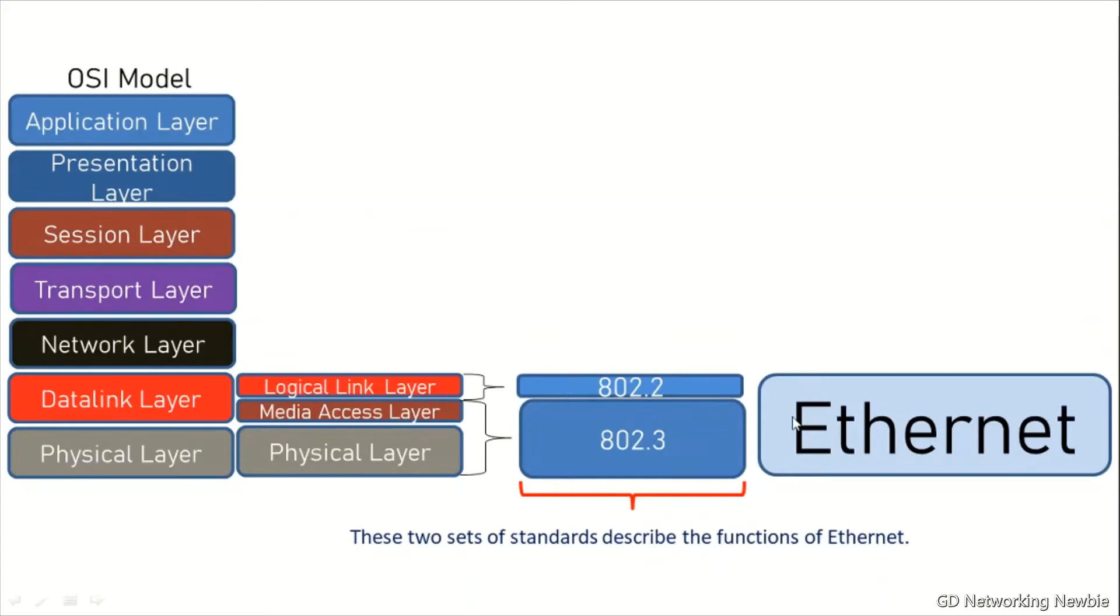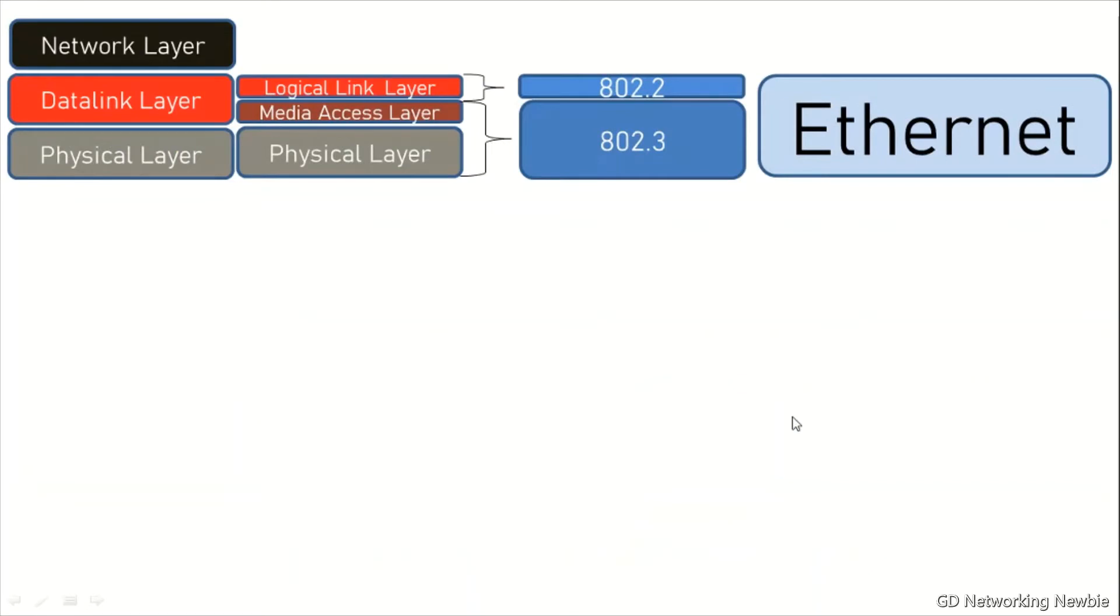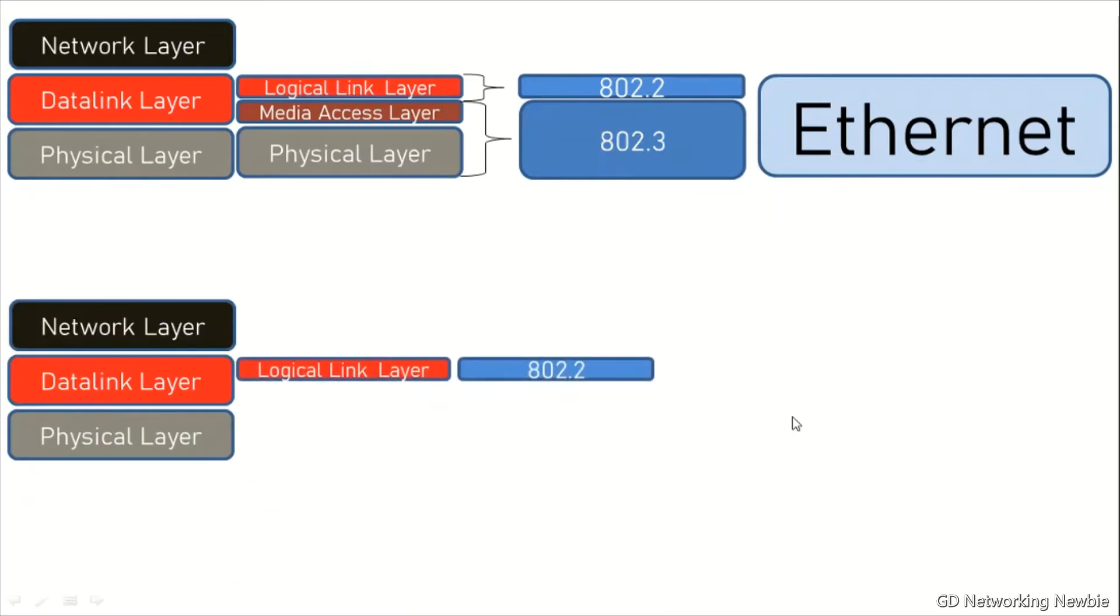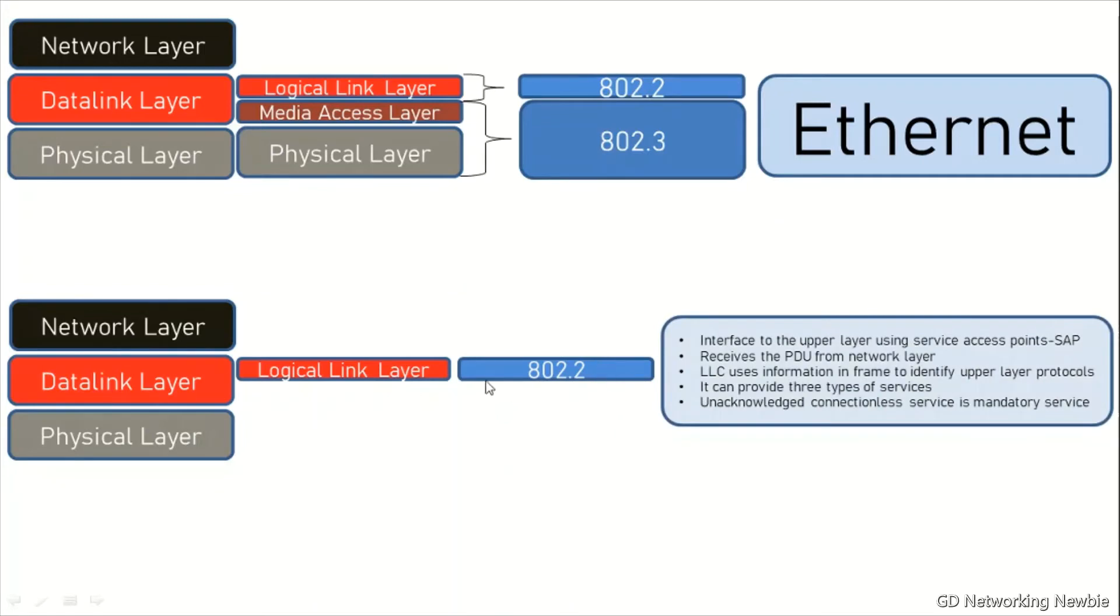After discussing briefly about Ethernet, let's move to a specific job of this logical link layer. It is the interface to the upper layer, so in this case the interface to the network layer. This interface is provided by using Service Access Point or SAP.